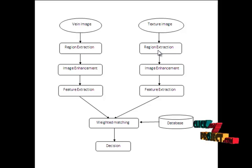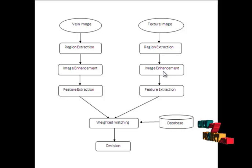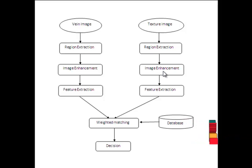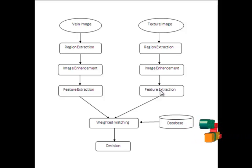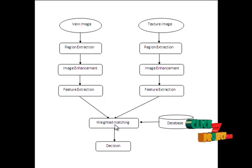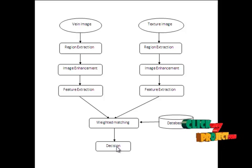For the texture branch, we initially extract the region using adaptive threshold segmentation. The extracted region passes to image enhancement, which is done based on a localized Radon transform to extract the texture pattern of the finger image. Gabor filters are then applied for feature extraction. The extracted features from both branches are merged into a single feature vector, from which we identify the person using the SVM classifier.